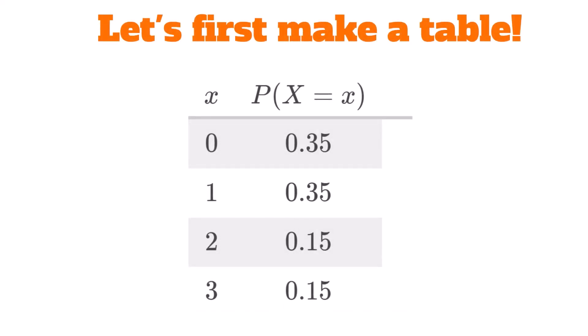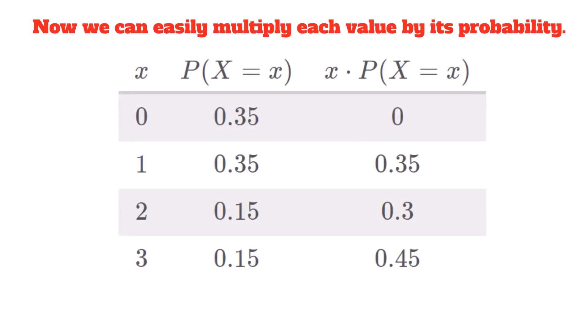Let's first make a table. X is equal to 0 with a probability of 0.35. X is equal to 1 with a probability of 0.35. And X is equal to 2 with a probability of 0.15. Now, we can easily multiply each value by its probability. The expected value of X is just the sum of all of these. So we get 0 plus 0.35 plus 0.3 plus 0.45, which gives us the expected value of 1.1.